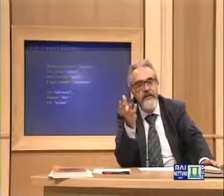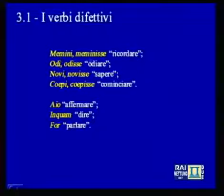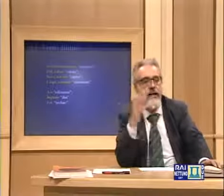Finally, some verbs appear in defective form — that is, unlike the completion we saw operated for 'sum', 'fero', and 'fio', here the completion is not made, and we find forms existing only in some moods and tenses. Among these defective verbs: 'memini' (I remember), 'odi' (I hate), 'novi' (I know), 'coepi' (I began) have only perfect stems; while 'aio' (I affirm), 'inquam' (I say), 'for' (I speak) have only present stems — and thus only the derivatives of one or the other form.